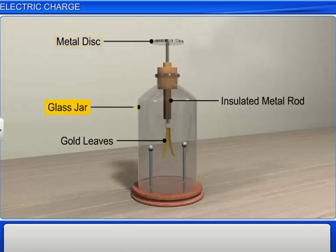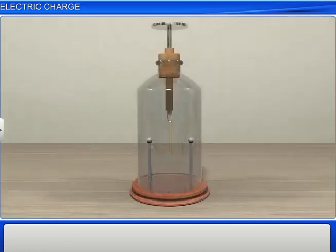To test a material like a glass rod for electrification, the object should be brought in contact with the metal disc of the gold leaf electroscope. The contact should be momentary.